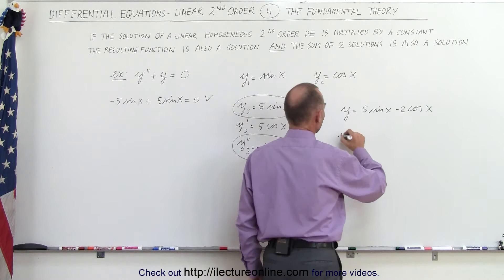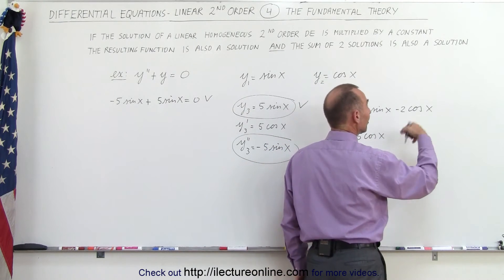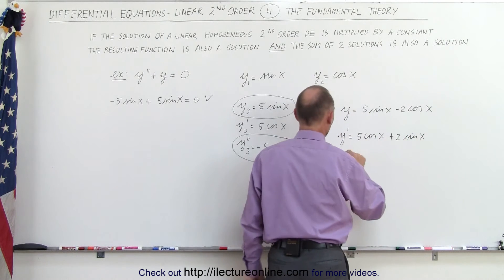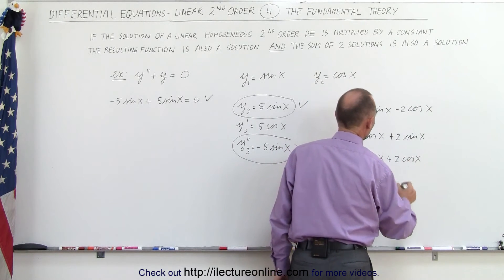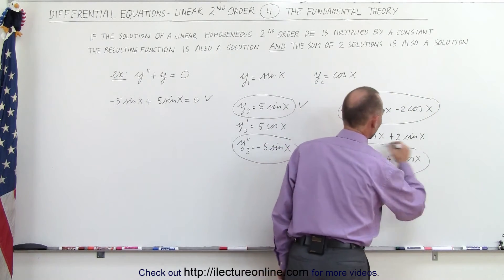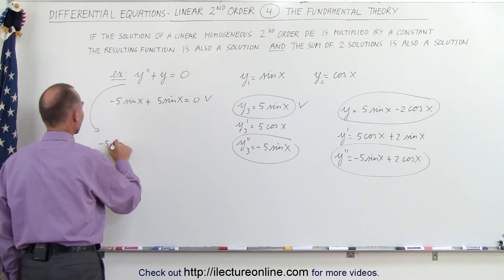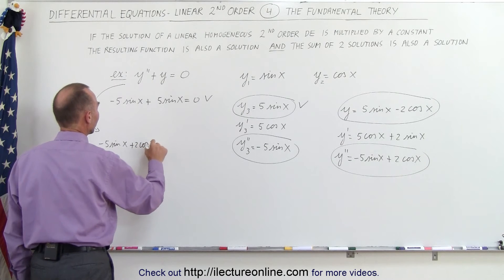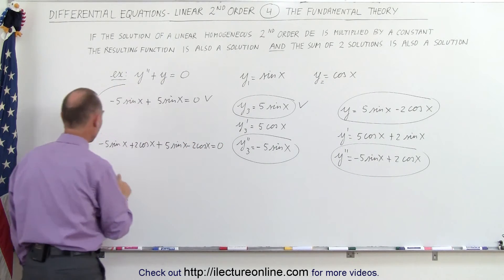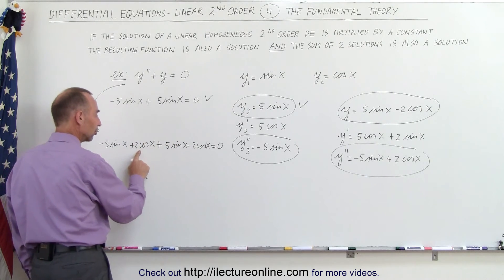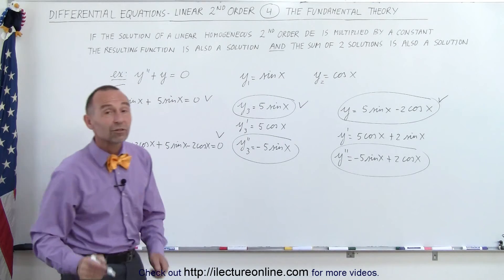We compute Y prime equal to five times the cosine of X, and the derivative of negative two cosine of X gives plus two times the sine of X. Then Y double prime equals negative five times the sine of X plus two times the cosine of X. Plugging this into our original differential equation: Y double prime gives minus five sine X plus two cosine X, plus Y which is five sine X minus two cosine X. We have minus five sine plus five sine, plus two cosine minus two cosine — sure enough that equals zero, so this is also a solution.